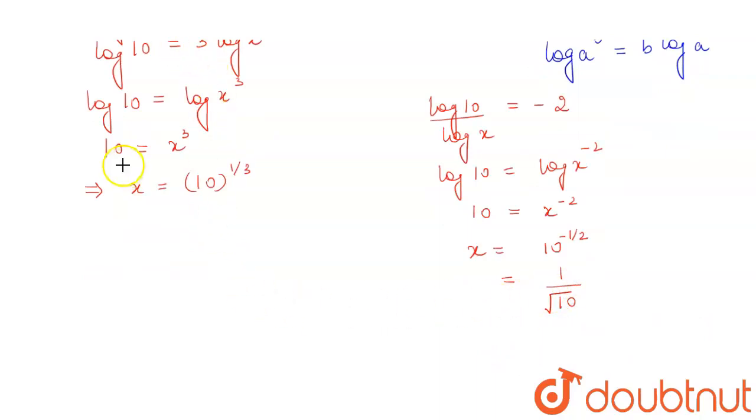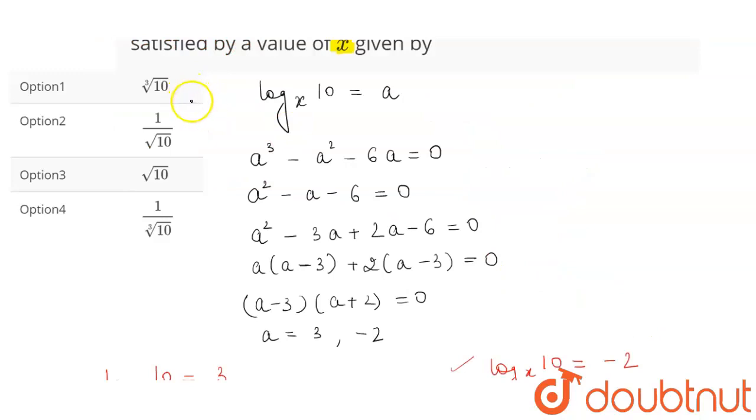So from here we see that the value of x comes out to be 10 to the power 1 by 3 and 1 by root 10. So seeing our options we get option number 1 and option number 2 to be correct, and this is our answer.